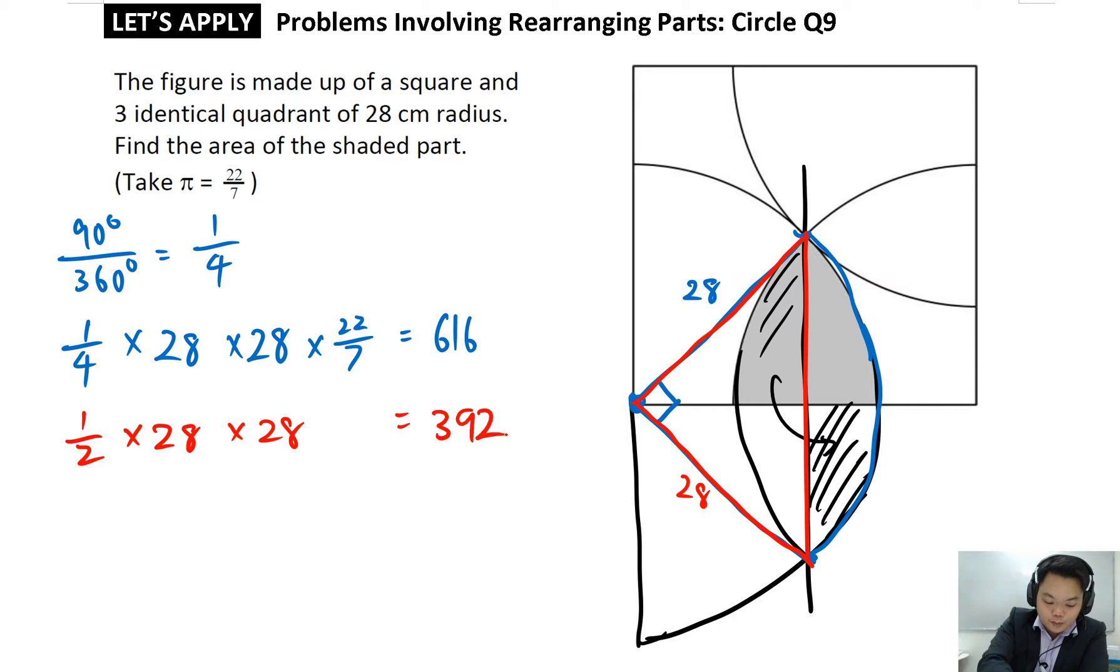Then the area of the shaded part is 616 minus 392 cm squared to give us 224 cm squared.